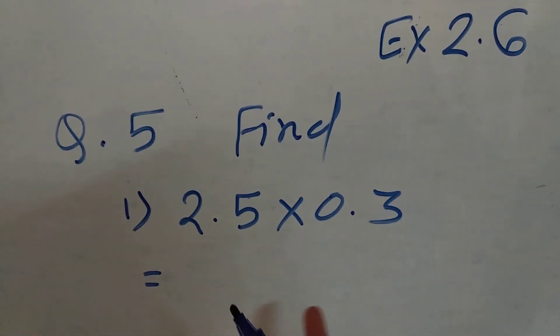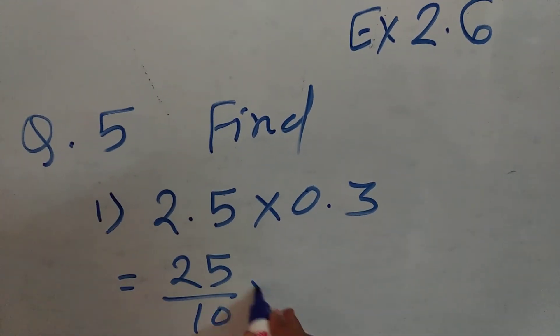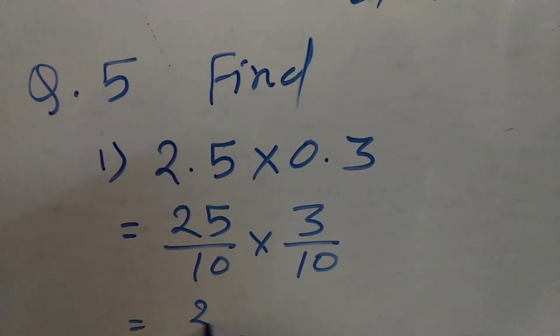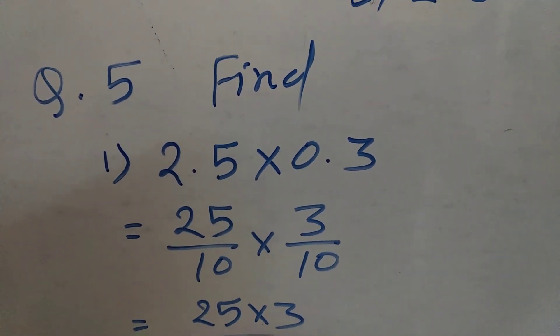Here, convert this into fraction. That is 25 upon 10 multiplied by 3 upon 10. Carry out the multiplication of a numerator, numerator and denominator, denominator.